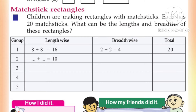What can be the length and breadth of these rectangles? Each child has 20 matchsticks to form a rectangle. You can find different combinations of length and breadth. It should not be a square.